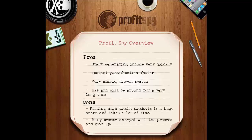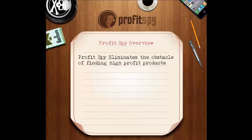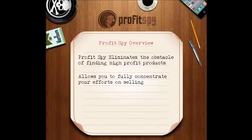Now with ProfitSpy, this overwhelming obstacle quickly becomes child's play with a simple click of a button. Within minutes, ProfitSpy will seek out any and all products from a chosen category on Amazon and quickly reveal these hidden high-profit items, thus allowing you to fully concentrate your efforts on listing and selling the products ProfitSpy has uncovered for you. Let's take a look under the hood at how this extremely useful application works.